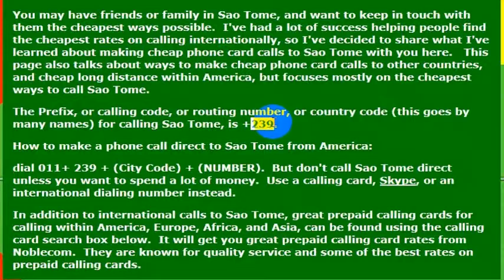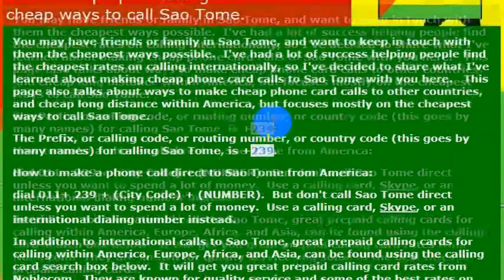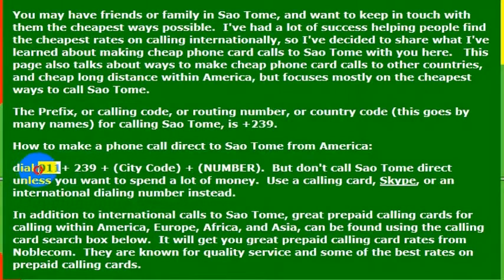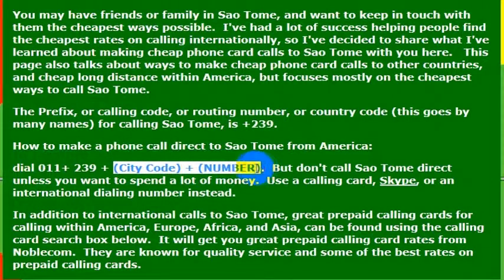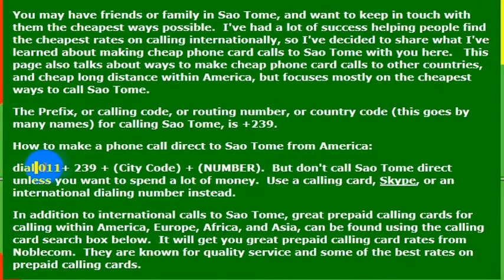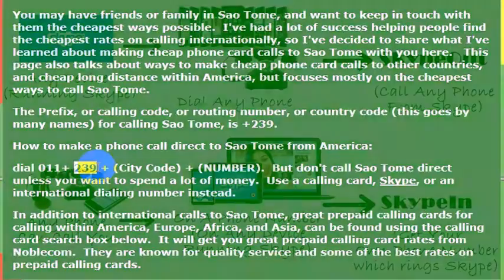So if you were trying to make a phone call directly from the United States, what you would want to do is dial 011 — that is the international dialing code — and then 239, and then the phone number you're trying to reach. I'm going to go through some options in just a minute about ways to do that for less money. But if you wanted to dial directly from a landline, you would just dial 011 and then 239 to reach the country.